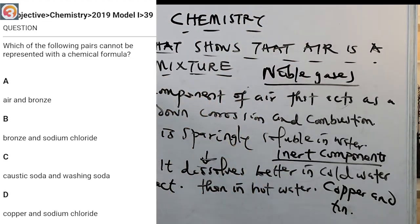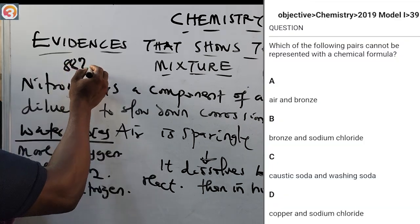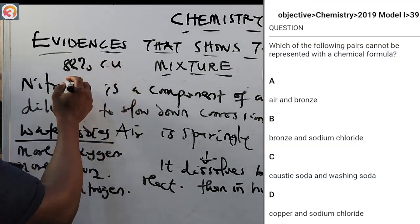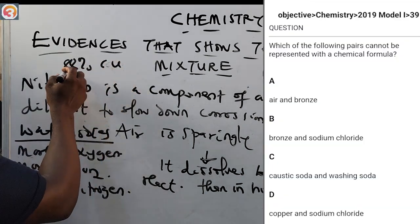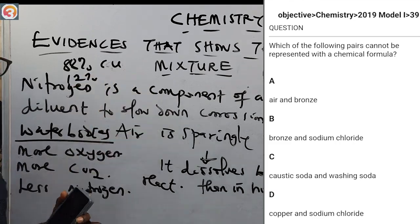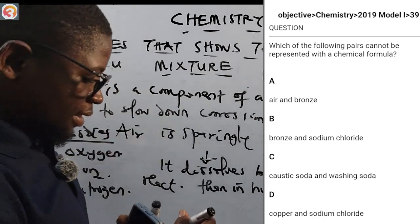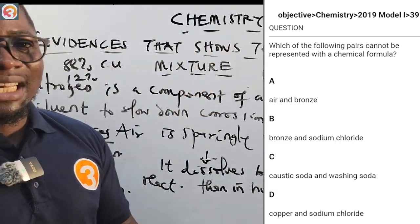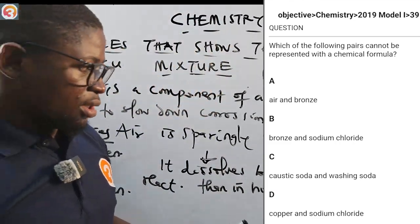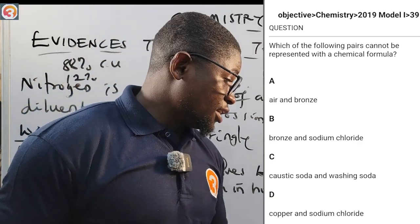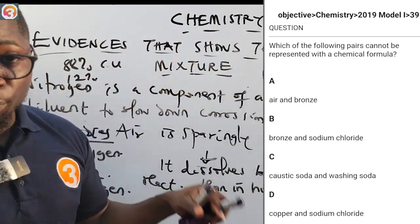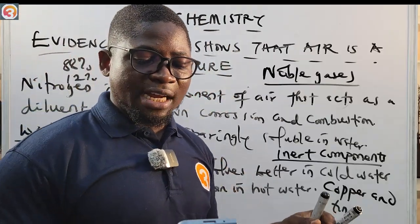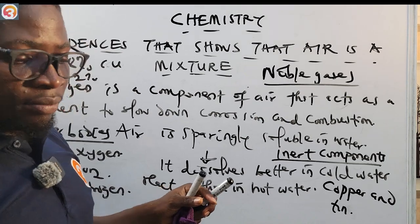Air is a mixture and bronze is also a mixture of copper and tin. Bronze contains about 88% copper and 12% tin. That means air and bronze are both mixtures — so the answer is A. Air and bronze cannot be represented by a chemical formula. That is 2019 number 39.